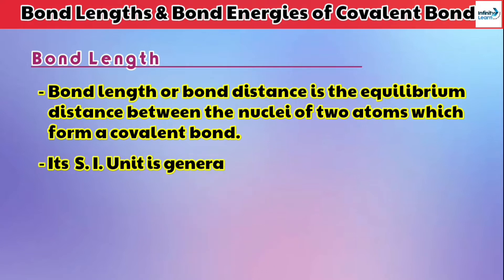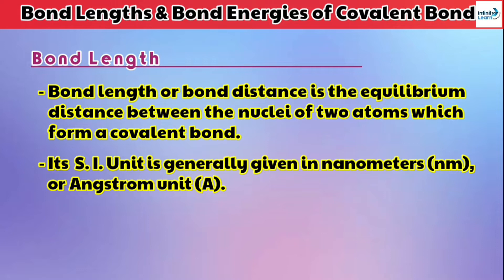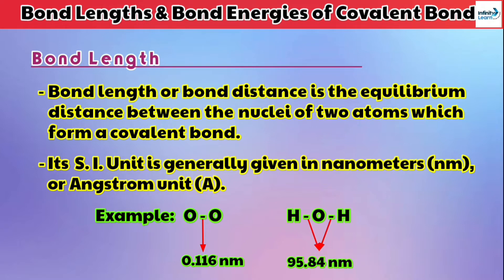The SI unit of bond length is generally given in nanometers (nm) or in angstrom units (Å). Some examples are: O2 bond length is 0.116 nanometers, H2O bond length is 95.84 nanometers, etc.